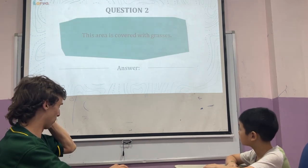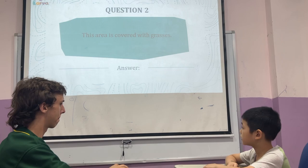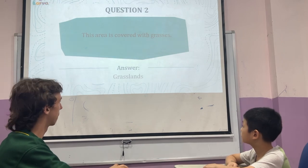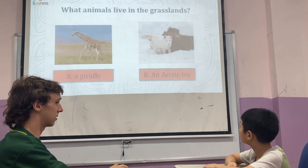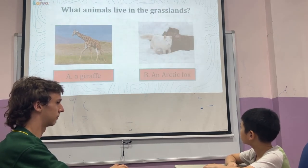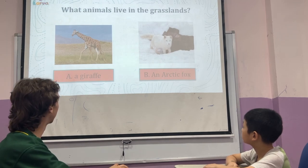Number two. This area is covered with grass. Grassland. And what animal lives in the grassland? Rainwater. Very nice.